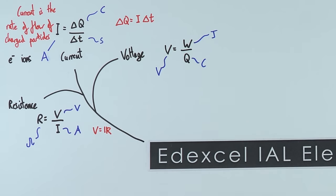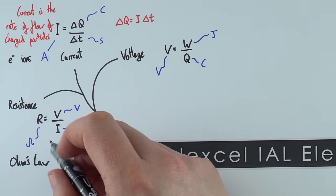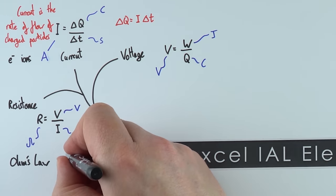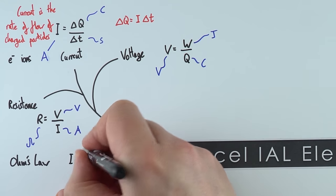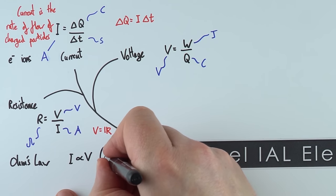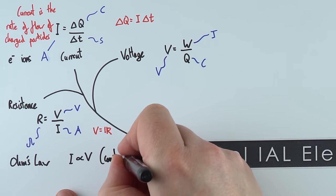There's also something called Ohm's law. Ohm's law states that for certain components the current is proportional to the voltage, provided we have a constant temperature.